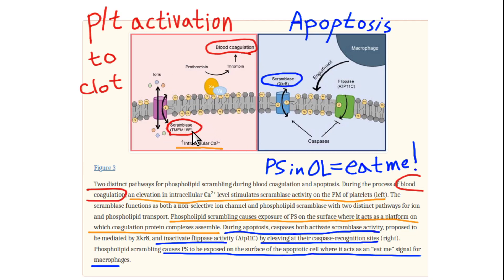In a platelet when it's ready to clot, calcium comes into the cell, activates the platelet, and then it flips its phosphatidylserine to the outer leaflet. That can then bind to blood clotting proteins and initiate blood clot formation. In other cells, it's a bad thing when phosphatidylserine flips to the outer leaflet — it's a signal, like wearing a big sign that says 'eat me.'